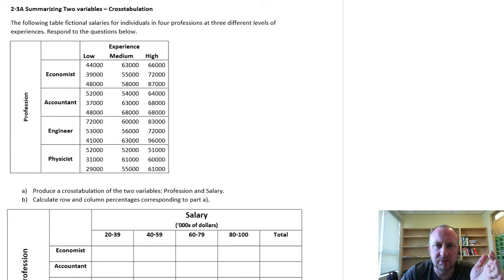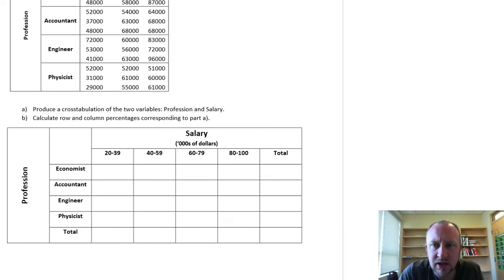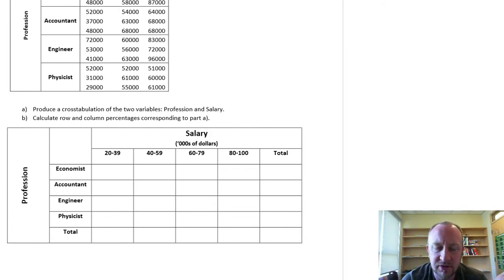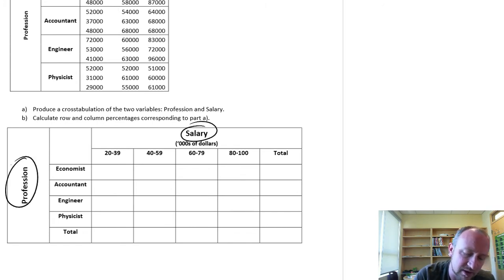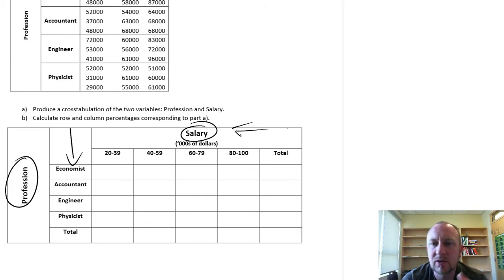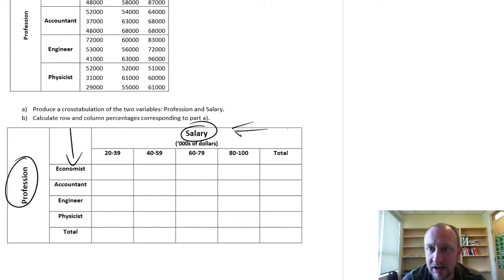I've gone ahead and produced the table that we're going to fill in, and I want to point out a couple of important aspects of this table that I don't want you to overlook when producing one on your own. We've got two different variables — I'm plotting salary and looking at profession. The nature of this data: here we have categorical information, and here we have numerical or quantitative information. For cross tabulations, the nature of the data doesn't really matter. We can use ordinal, nominal, ratio, or interval data, and we can blend them — both variables don't have to be the same type.